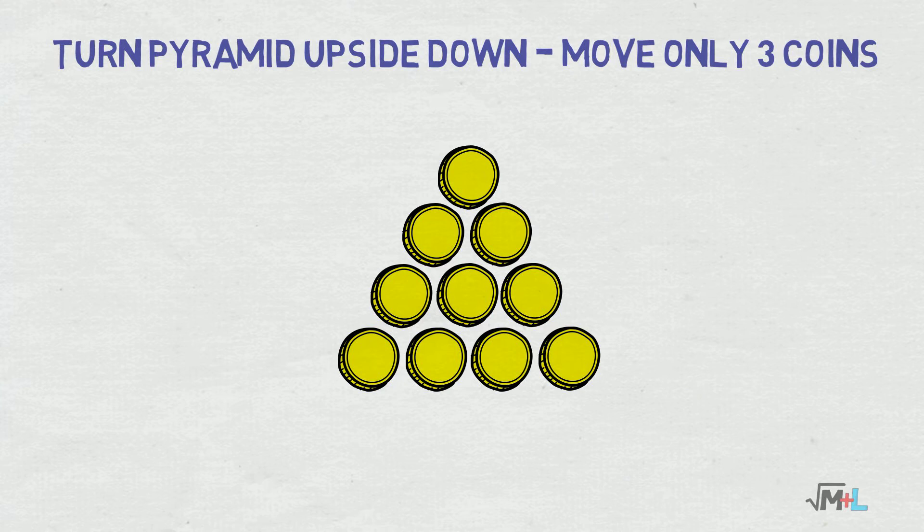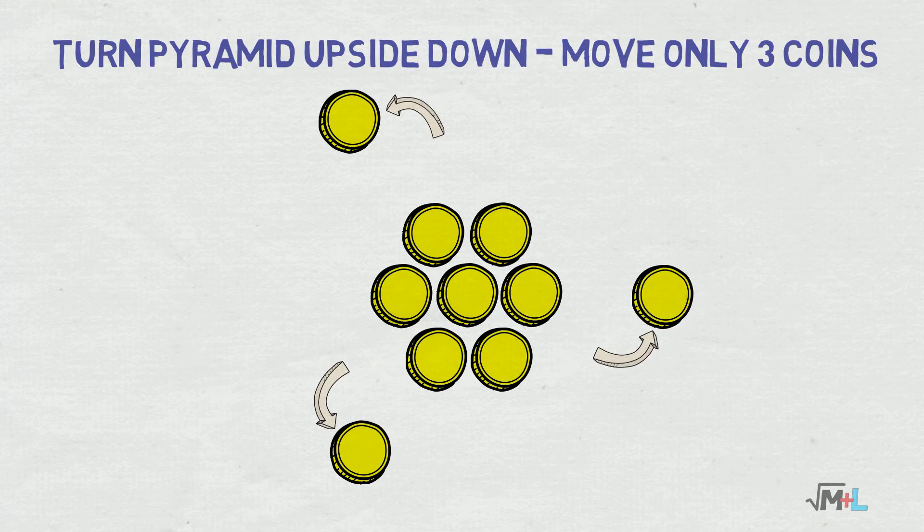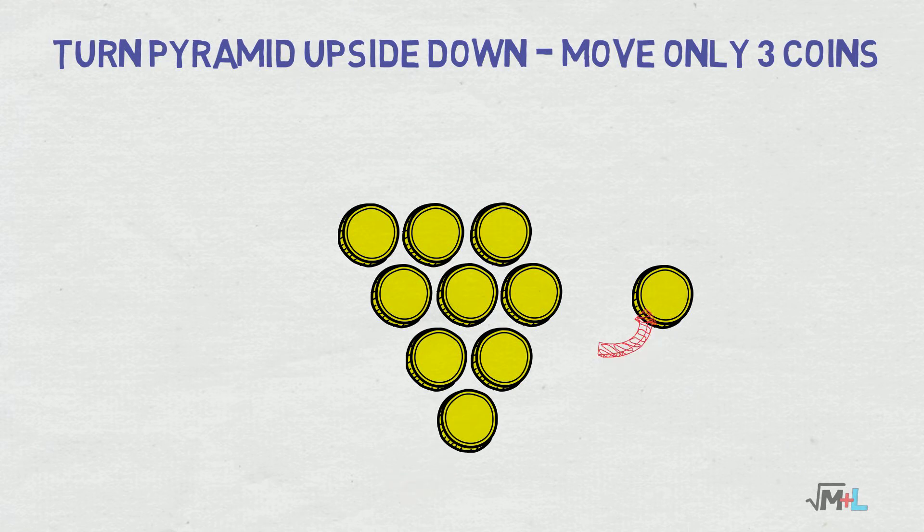3, 2, 1. Solution. First, remove the 3 corners of the pyramid and you will be left with this hexagon center. You can now arrange corner coins however you like, for example this way, so now you have a pyramid upside down.